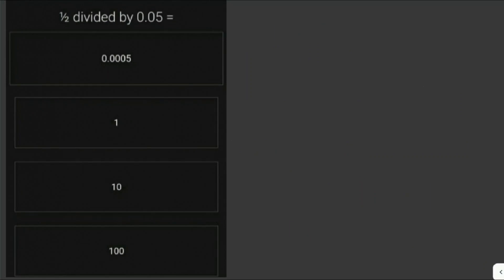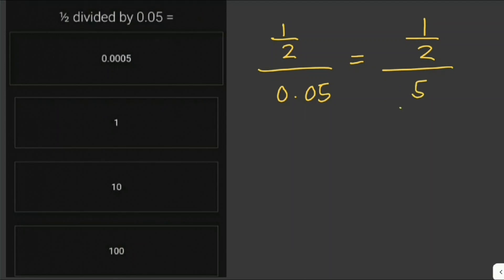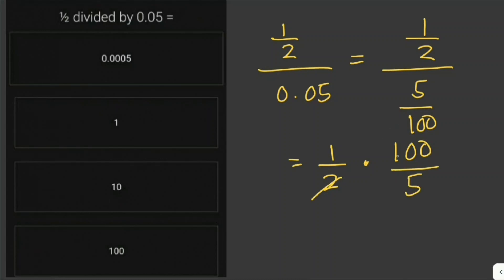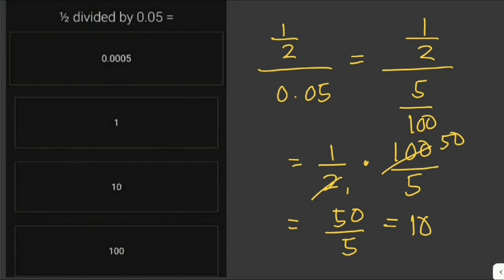Let's solve another problem: one half divided by 0.05. Since you're not allowed to use the calculator, write 0.05 as 5 over 100. Then write this as one half times 100 over 5 — flip the denominator and change the operator to multiplication. Since 100 is divisible by 2, it becomes 50 over 5, which equals 10. So this is our answer.